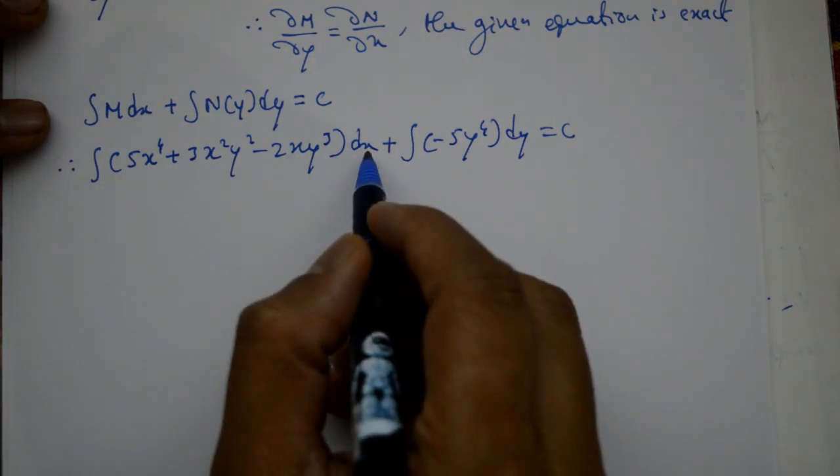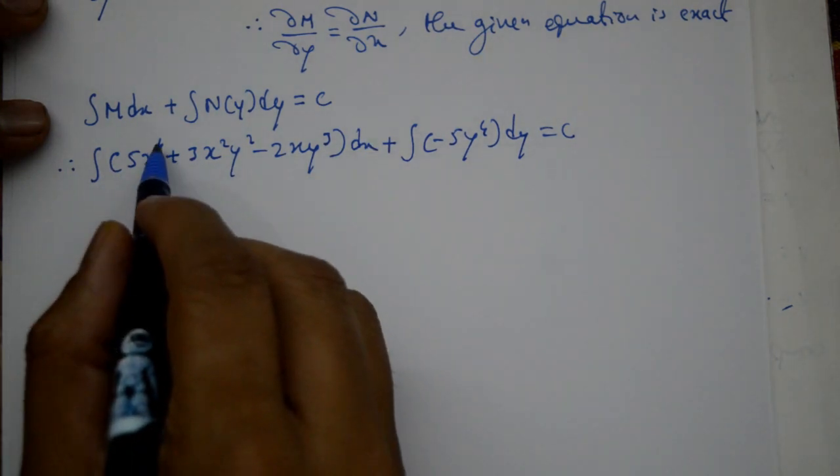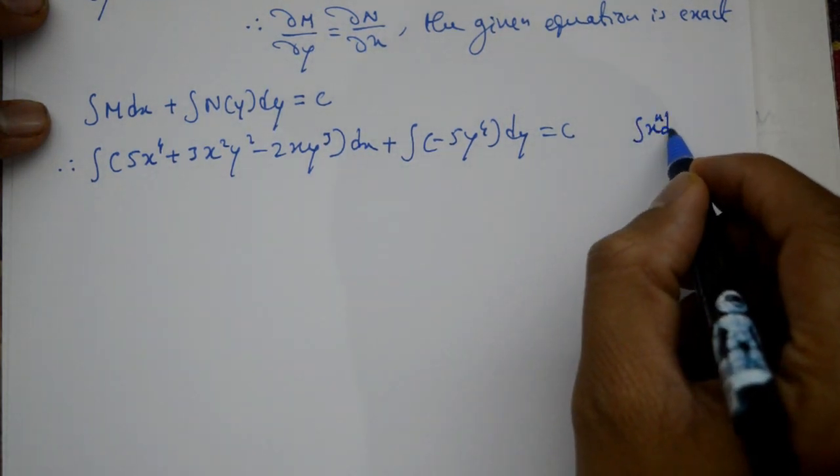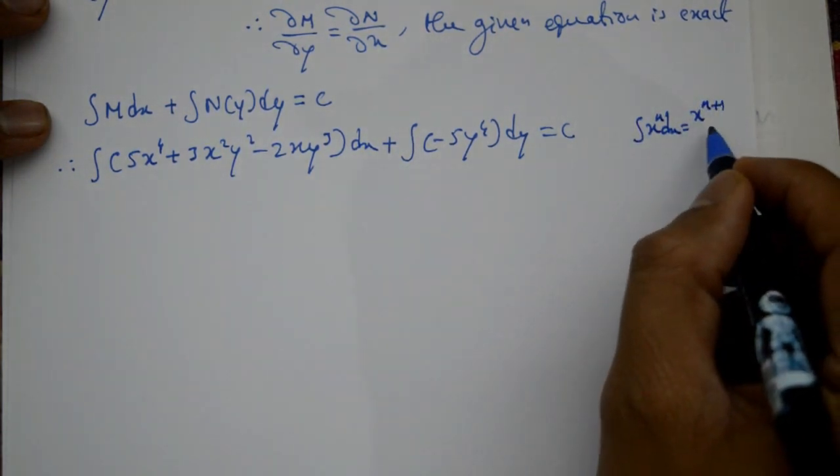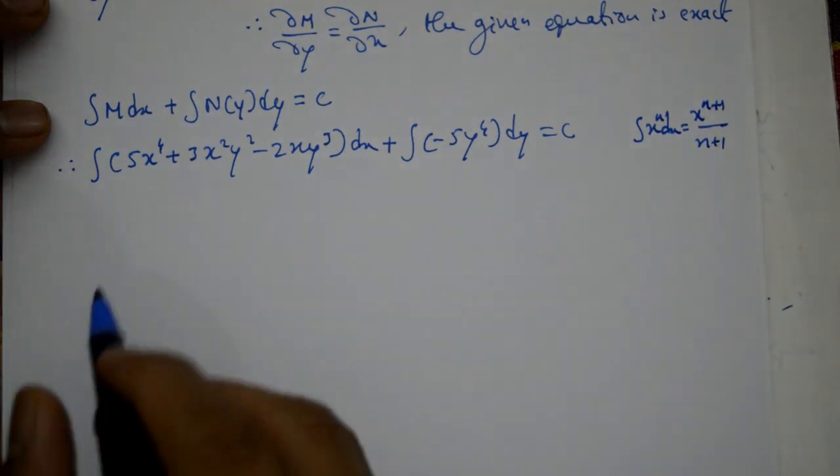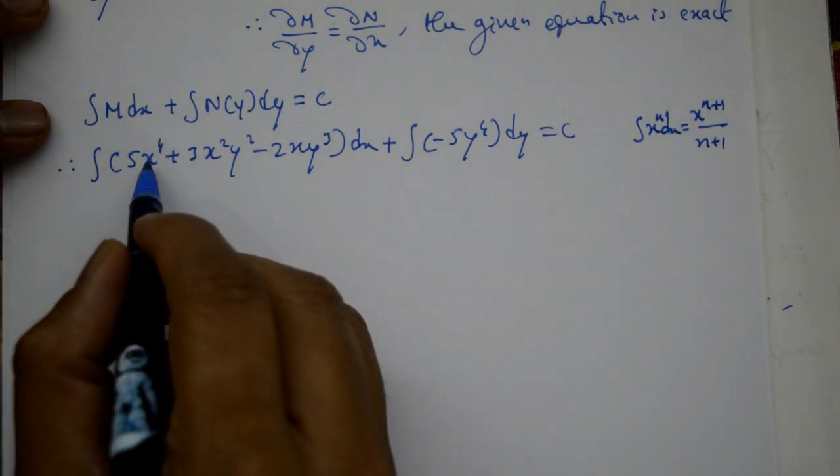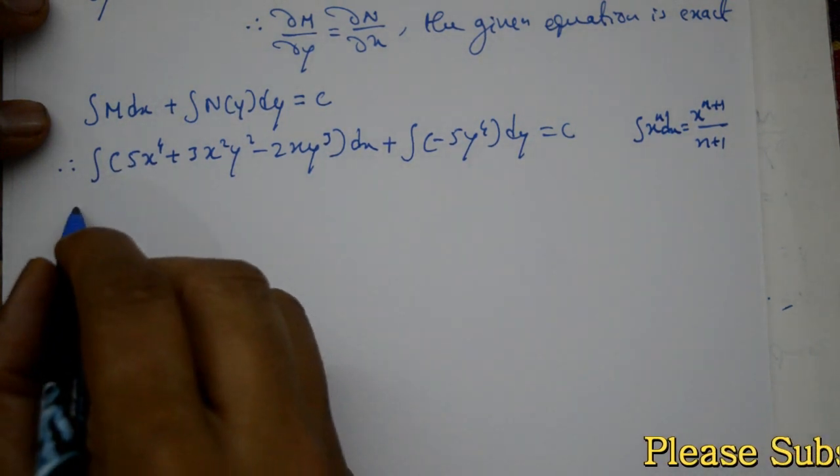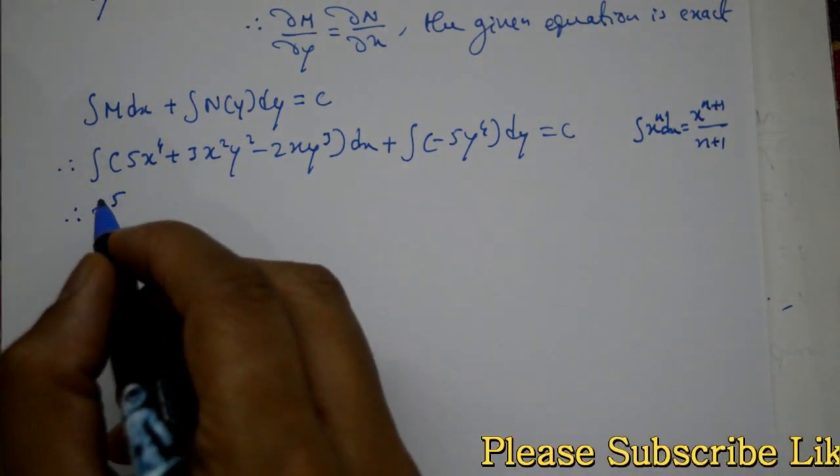Integration with respect to x variable. x^4 integrated using the general formula x^n becomes x^(n+1)/(n+1). So x^5/5, 5 and 5 cancel, giving x^5. Next, plus 3y^2 is constant, integrate x^2 to get x^3/3, 3 cancel, so x^3y^2.